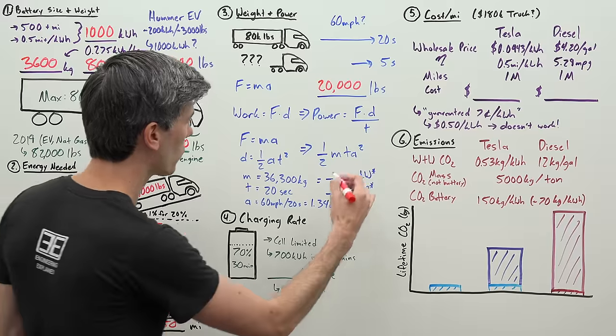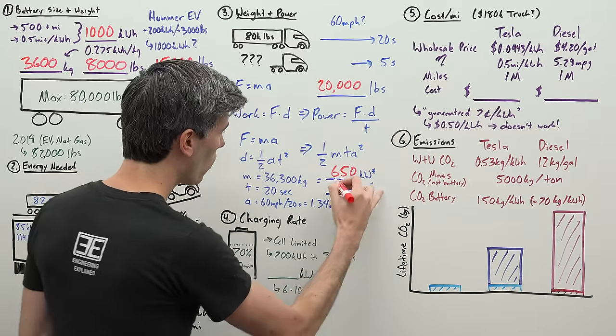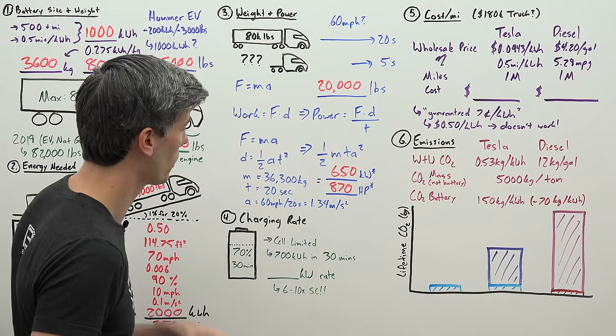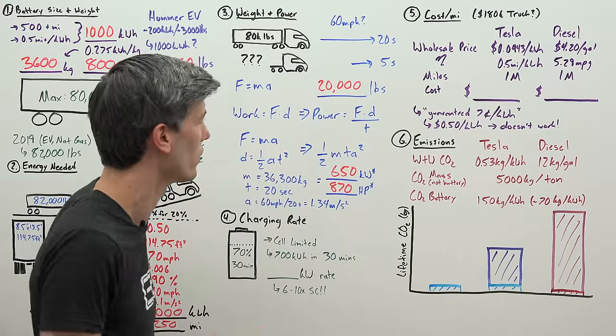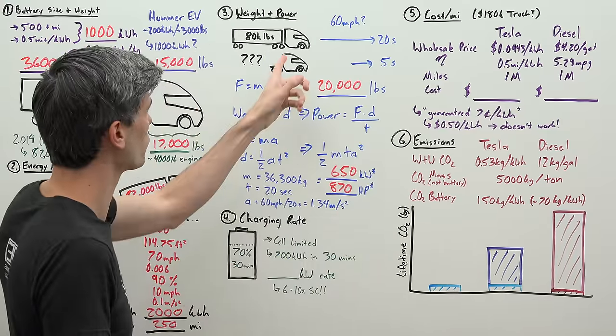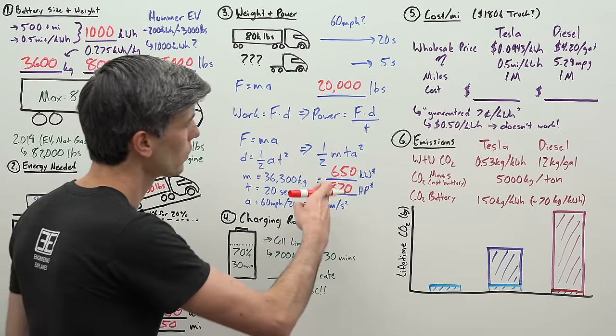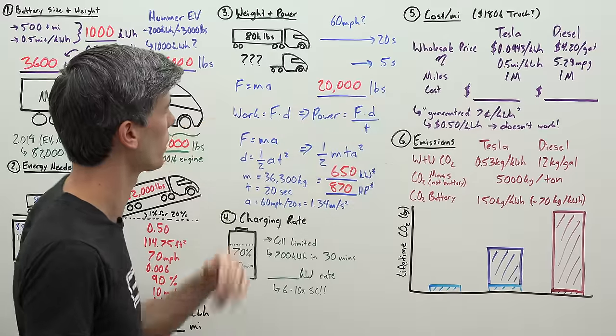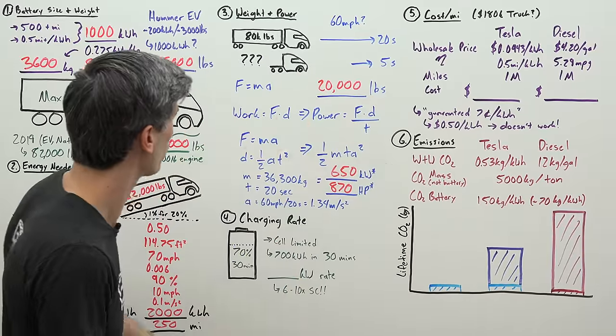We have all those variables. We know our mass, we know our time, we know 60 miles per hour in 20 seconds is the same as 1.34 meters per second squared. That tells us the amount of power required in this scenario is about 650 kilowatts or about 870 horsepower. I have an asterisk here because this is the absolute minimum you would need. You're not taking into consideration efficiency or the rotational inertia for all these tires. So you're looking at around a thousand horsepower for this thing to be able to do what they claim of zero to 60 in 20 seconds. Yeah, the math checks out.